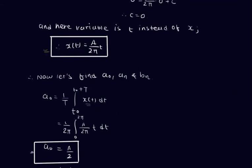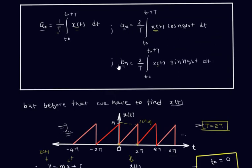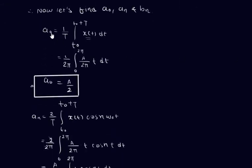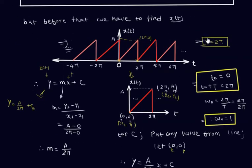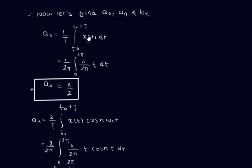Now let us calculate a0, an, and bn. To find a0, we use a0 = (1/T)·∫[0 to 2π] x(t) dt. With T=2π, limits 0 to 2π, and x(t) = (A/2π)·t, after integration we get a0 = A/2.